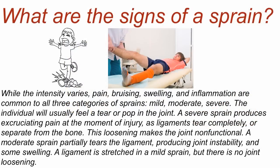What are the signs of a sprain? While the intensity varies, pain, bruising, swelling, and inflammation are common to all three categories of sprains: mild, moderate, or severe. The individual will usually feel a tear or a pop in the joint. A severe sprain produces excruciating pain at the moment of injury as ligaments tear completely or separate from the bone, making the joint non-functional. A moderate sprain partially tears the ligament, producing joint instability and some swelling. A ligament is stretched in a mild sprain, but there is no joint loosening.